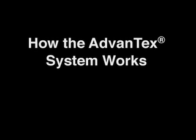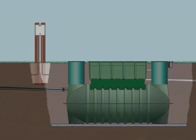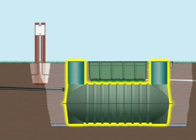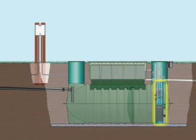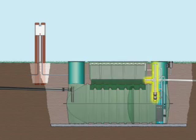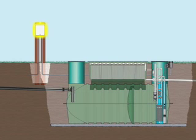How the Advantex system works. The Advantex treatment system has five parts: the processing tank, the biotube pumping package, the Advantex filter pod, the recirculating splitter valve, and the control panel.